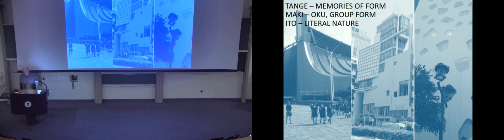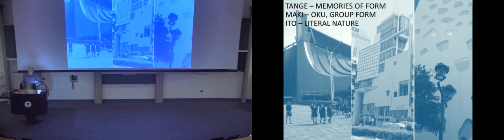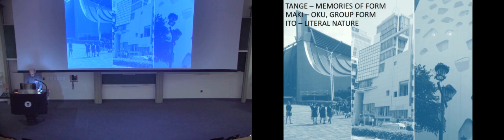Fumihiko Maki, twelve years younger, produced buildings which had very little obvious resemblance to traditional ones. However, he believed that oku — the layering of space towards a secret centre of a building — was an essential requirement in Japanese spatial organization. Secondly, he designed buildings with lightweight skins of modular components, which surely reflect traditional construction. And thirdly, he pursued an idea he called group form, which in some measure derived from his observation of Japanese villages.